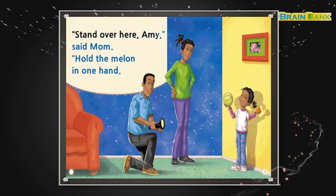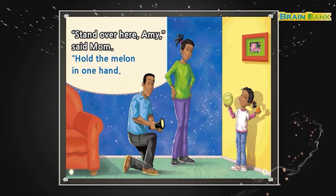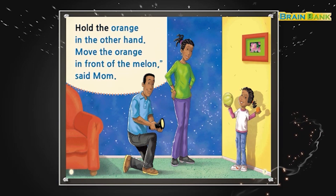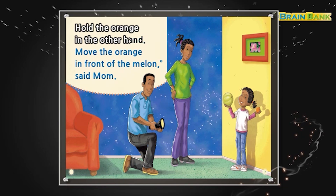Stand over here, Amy, said Mom. Hold the melon in one hand. Hold the orange in the other hand. Move the orange in front of the melon.